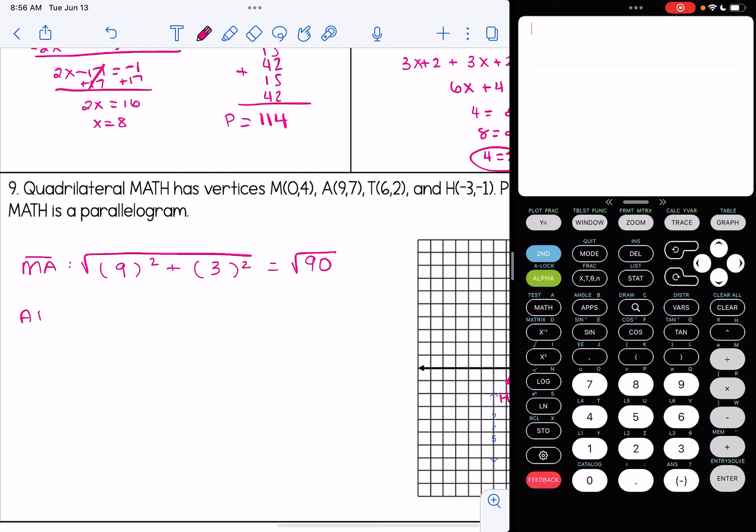Let's find the next length. So AT. When I subtract the x's, I get negative 3. When I subtract the y's, I get negative 5. When I simplify this, negative 3 squared is 9. Negative 5 squared is 25. Remember, those are positives. Negative times a negative is a positive. And 9 plus 25 is going to give me 34.